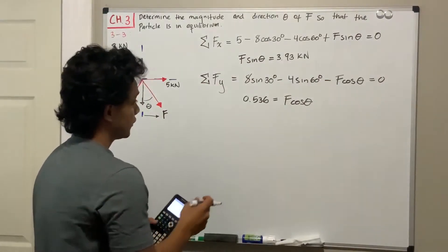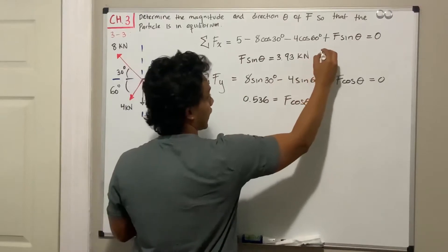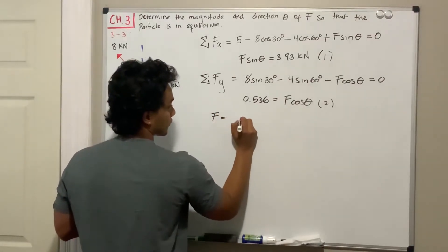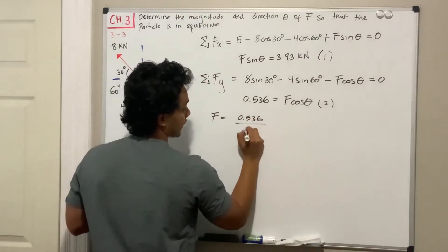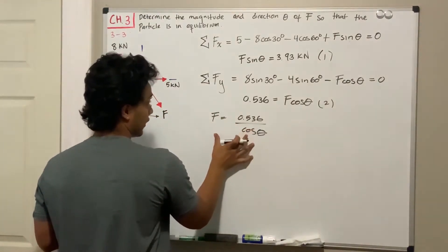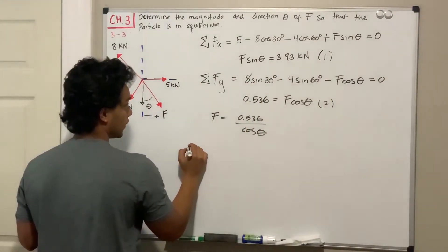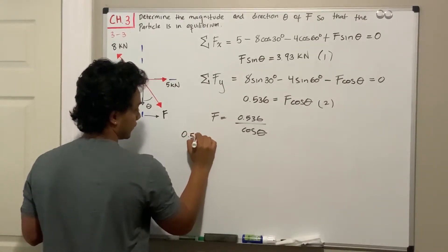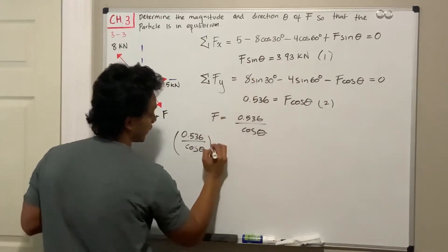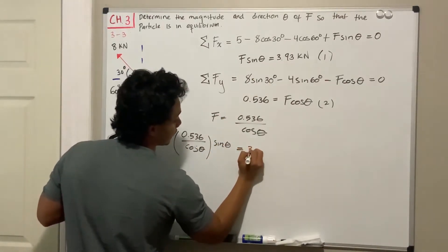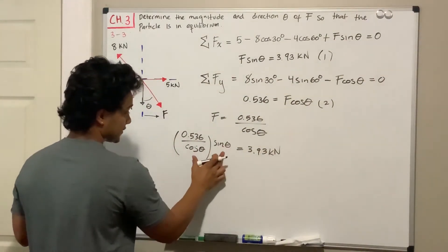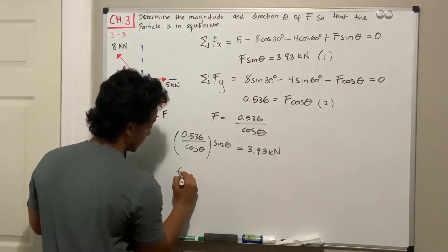We now have two equations: equation one gives F sine of theta equals 3.93 kN, and equation two gives F cosine of theta equals 0.536 kN. Solving for F in equation two: F equals 0.536 divided by cosine of theta. Plugging that back into equation one: 0.536 divided by cosine of theta, multiplied by sine of theta, equals 3.93 kilonewtons. Since sine over cosine equals tangent, we get tangent of theta equals 3.93 divided by 0.536, which equals 7.33.